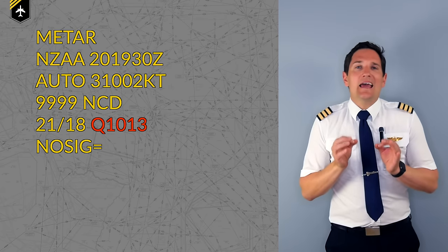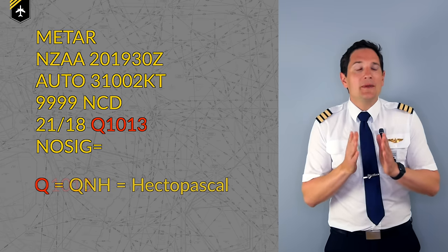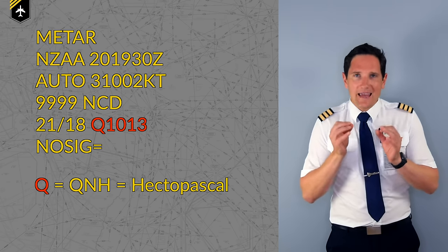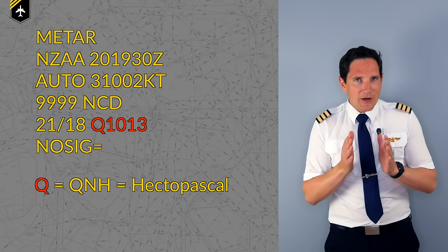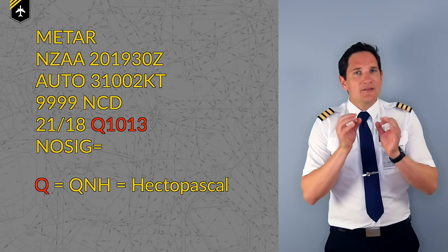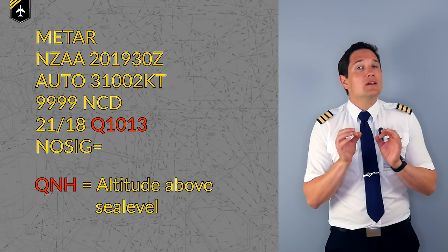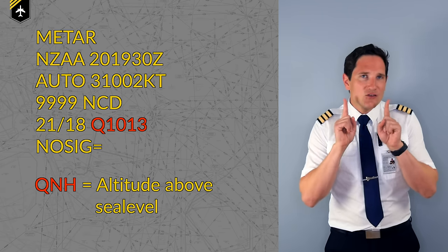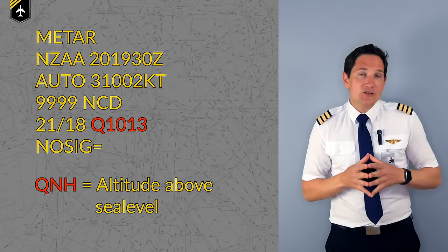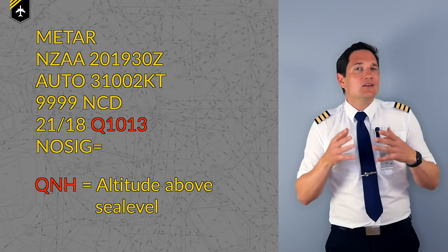The next part is the air pressure. In our example, we see the letter Q meaning QNH, which is given in a unit called hectopascals. The pressure is very important as it is used to calibrate the altimeters. Note that QNH is used to show the altitude above sea level, not above the aerodrome level. For the altimeter to show your height above the aerodrome, you would need to set a QFE — think of the field elevation.